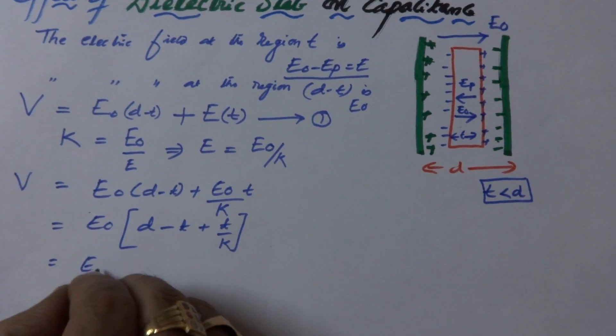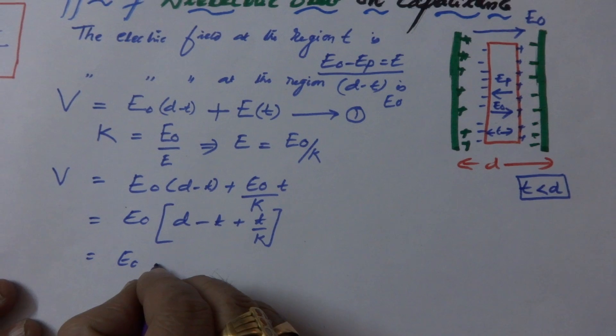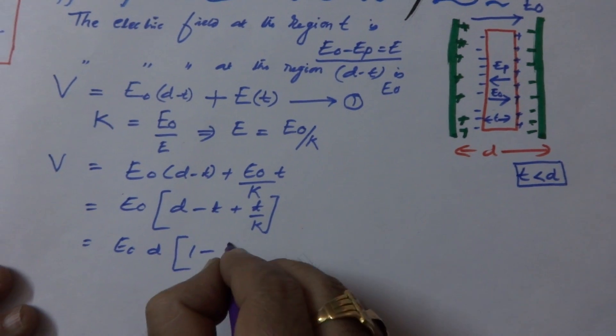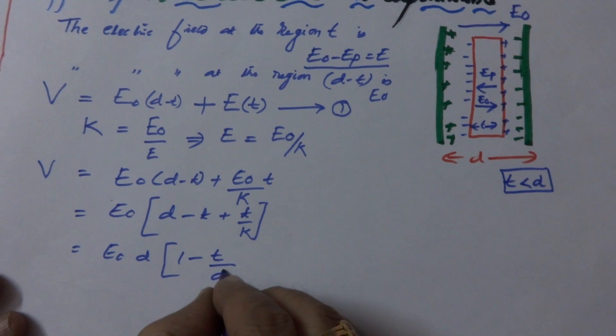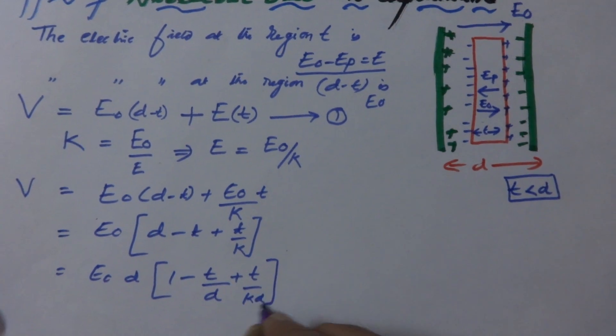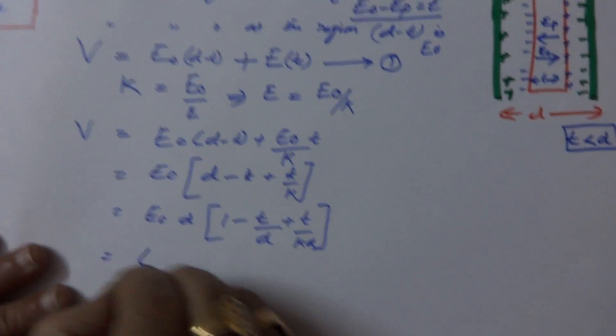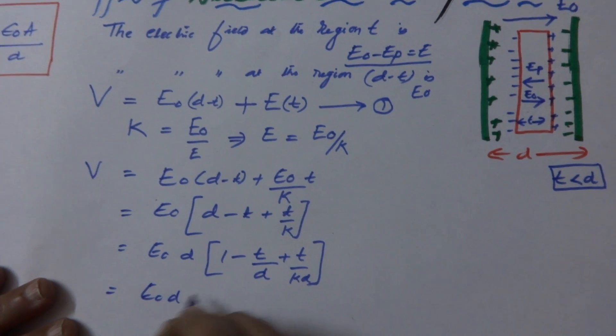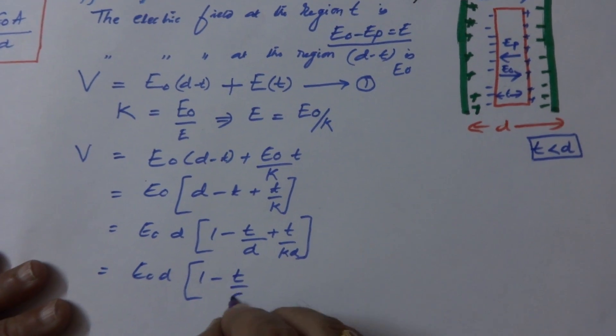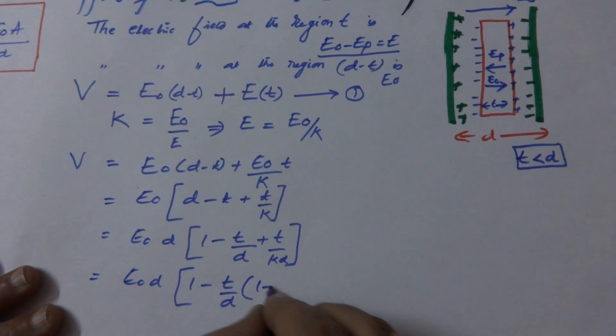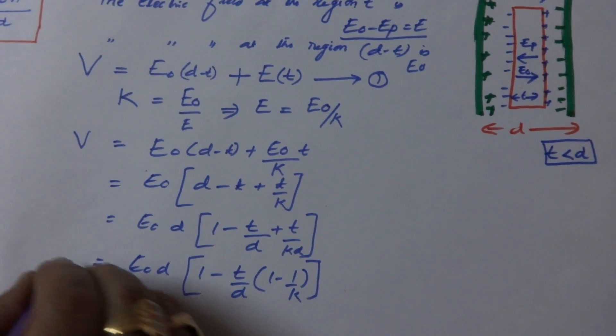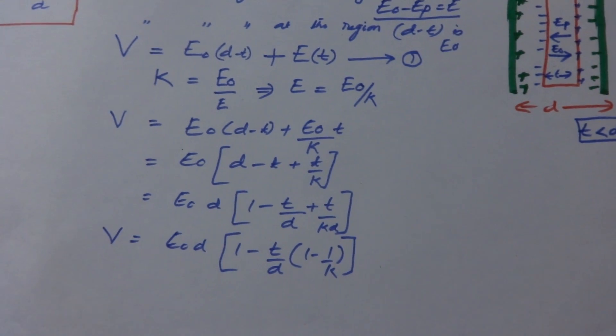E0, if I take d as common, 1 minus t by d plus t by kd. Now, E0 into d, 1 minus, if I take t by d, it will be 1 minus 1 by k. So this is V.